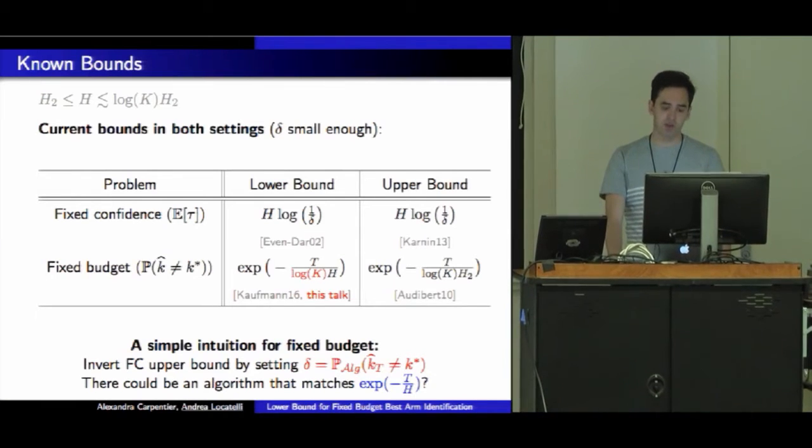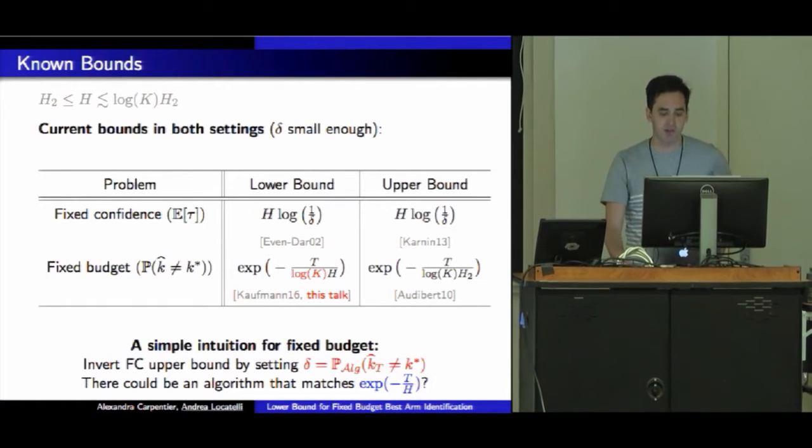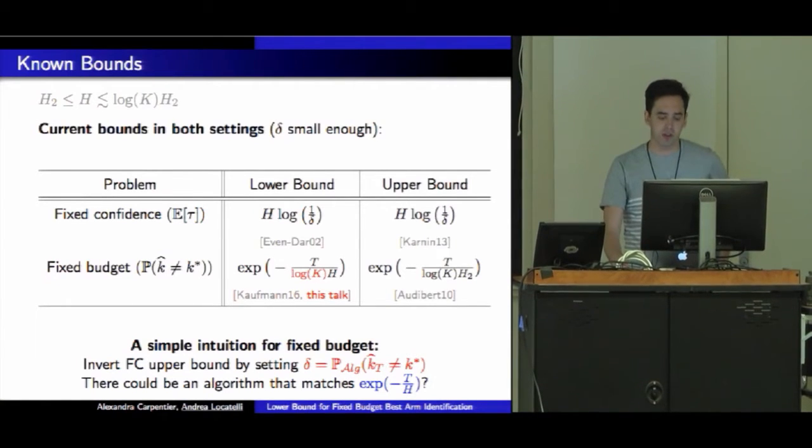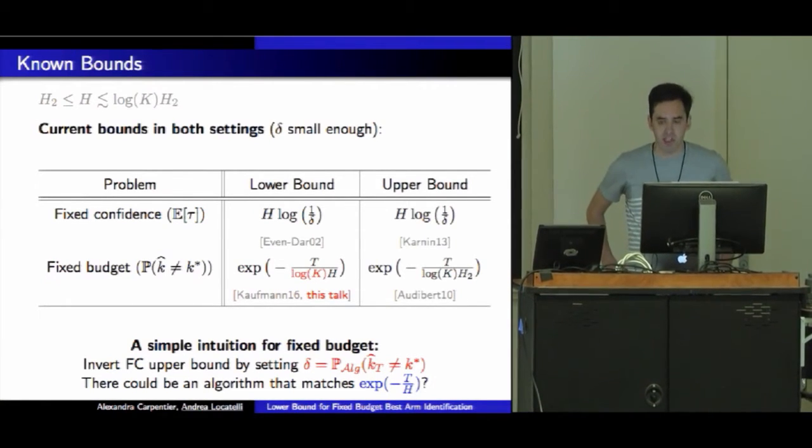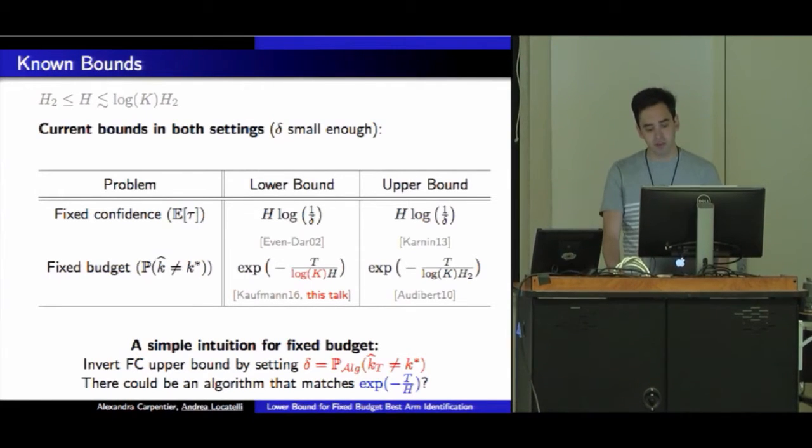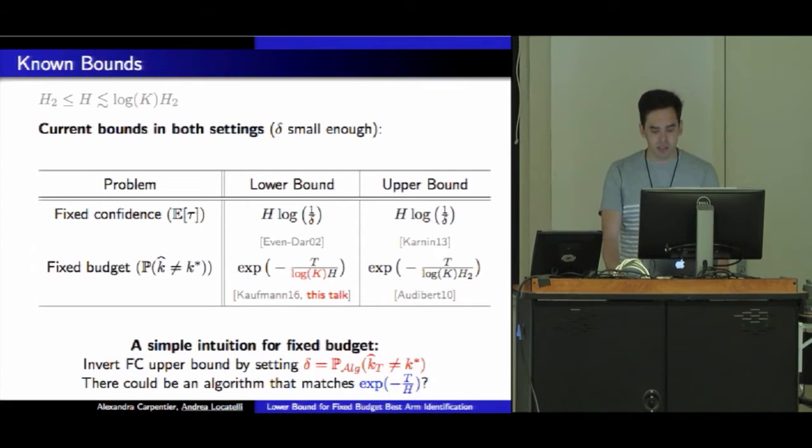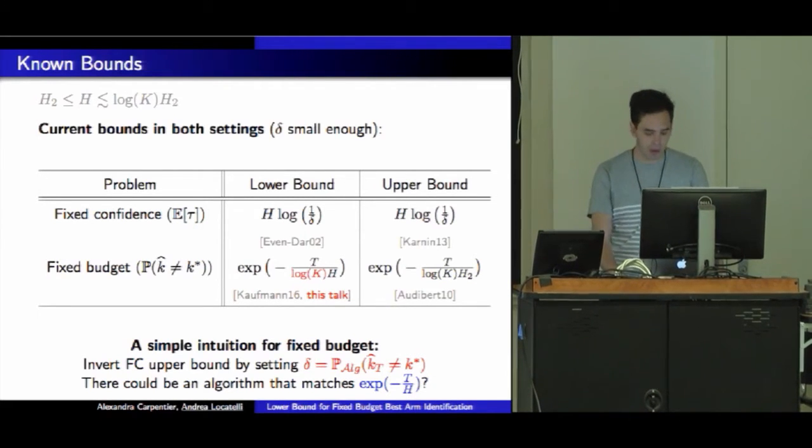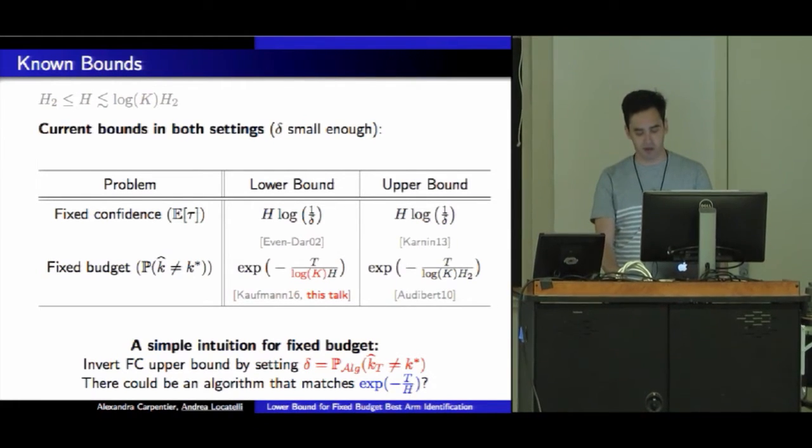What are the current bounds in both settings? For delta small enough, the lower bound and the upper bound in the fixed confidence framework for the first order term are matching. The community has moved on to much more refined analysis. But in the fixed budget setting, there's a gap between the lower bound and the upper bound related to the quantities H_2, H, and this log K factor.